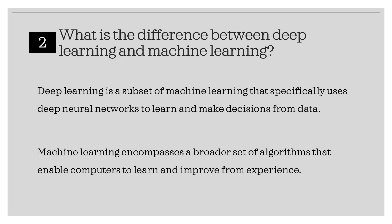What is the difference between deep learning and machine learning? Deep learning is a subset of machine learning that specifically uses deep neural networks to learn and make decisions from data. Machine learning encompasses a broader set of algorithms that enable computers to learn and improve from experience.